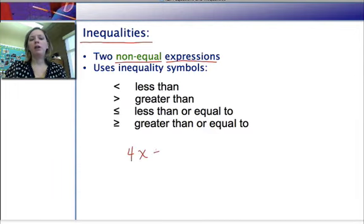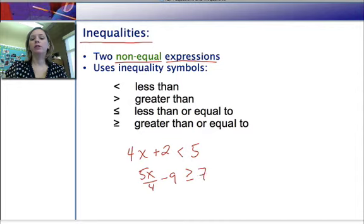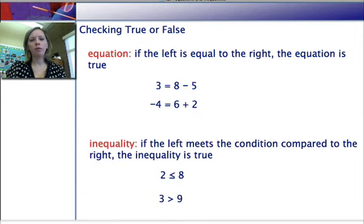So maybe you have an inequality like 4x plus 2 is less than 5. The left side is not equal to the right side, but it's smaller than or less than the right side. Or maybe you have 5x over 4 minus 9 is greater than or equal to 7. Or maybe it's even something complicated like 7x plus 2. So those are our inequalities. So we want to focus on how do you tell the difference between an expression, an equation, and an inequality, either based on what you see in the math or what you hear in the language.